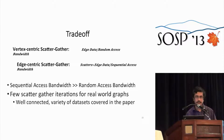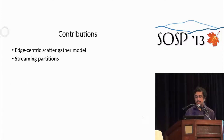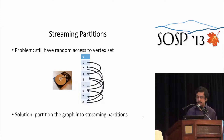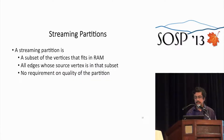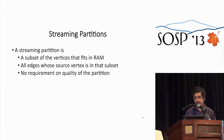The second contribution is streaming partitions. We still have random access to the vertex set sitting on disk, which is bad. Our solution was to partition the graph into streaming partitions — simply a subset of vertices that fits in random access memory, along with all edges whose source vertex is in that subset. We have no requirement on the quality of the partition, so we just do random partitioning with very low overhead.